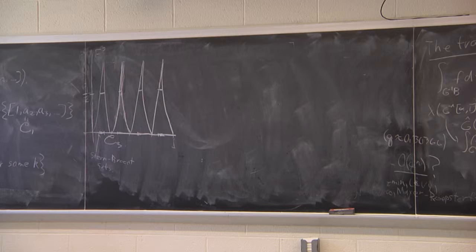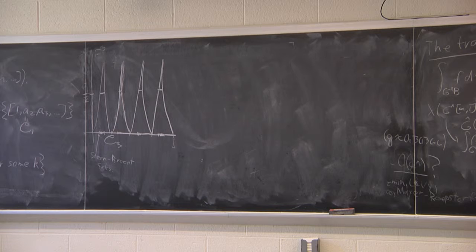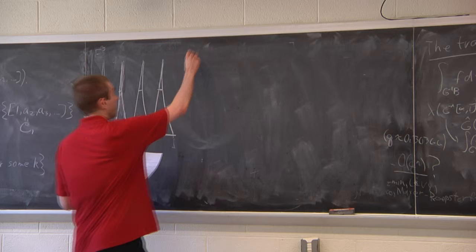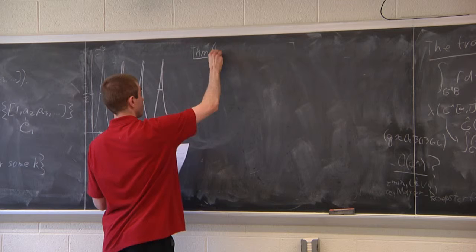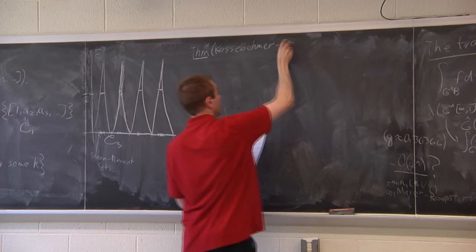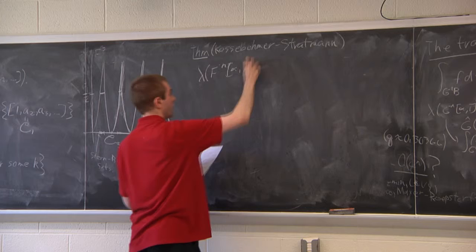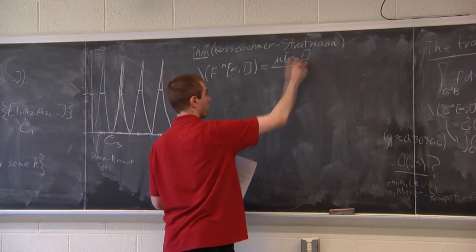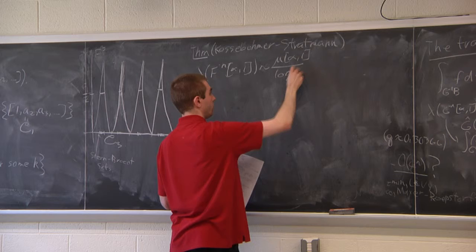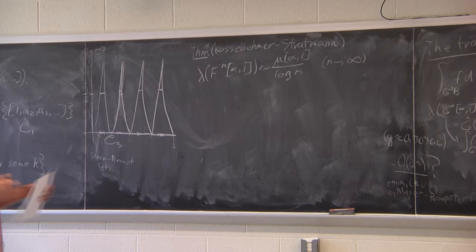Returning to our question on the asymptotic behavior of these sets: it was Kesseböhmer and Stratmann who found the overall asymptotic behavior. They proved that the Lebesgue measure of the nth inverse image of [α,1] is asymptotic to μ([α,1]) / log n as n → ∞, so the ratio of those two quantities goes to 1.